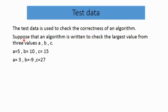Suppose an algorithm is written to check the largest value from three values A, B, C. The values of the test data can be positive, negative, or zero. For example: A=5, B=10, C=15 — all positive values. Then A=3, B=-9, C=27 — where A and C are positive and B is negative.